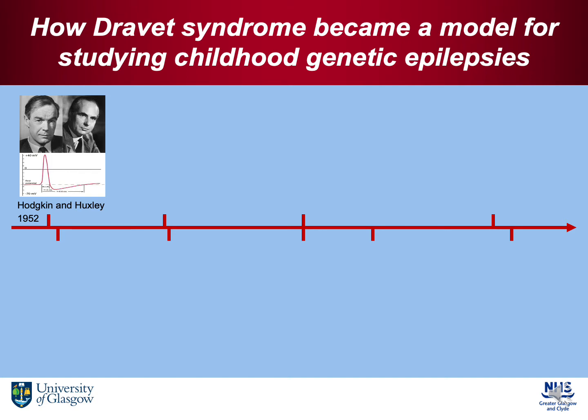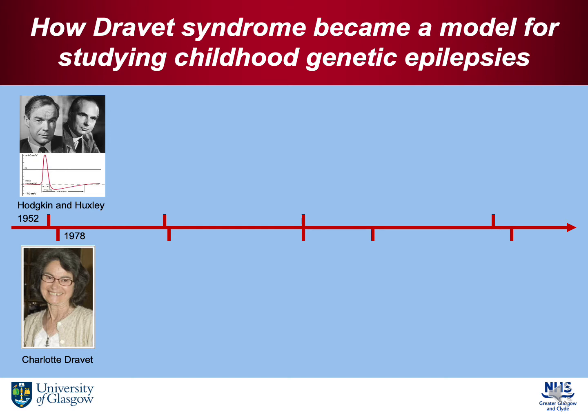First of all, to talk a little bit about Dravet syndrome and how Dravet syndrome became a model for studying childhood genetic epilepsies. You will see throughout this presentation how we've come a long way in discovery of this disorder and now having more up-to-date treatments, and how registries really can help moving us to the next stage in epilepsy care. Dravet syndrome really all starts with the discovery of the action potential by Hodgkin and Huxley in 1952, and then Charlotte Dravet really defined the clinical phenotype of Dravet syndrome.